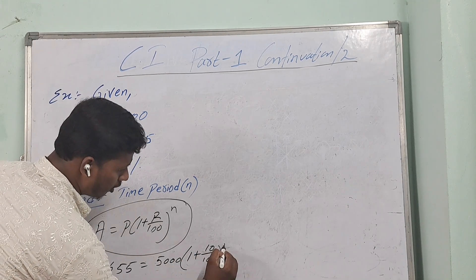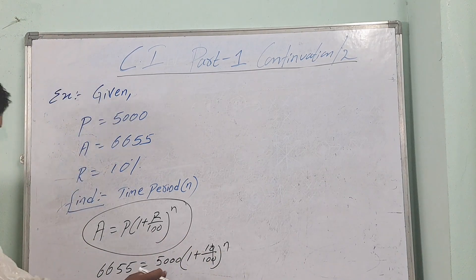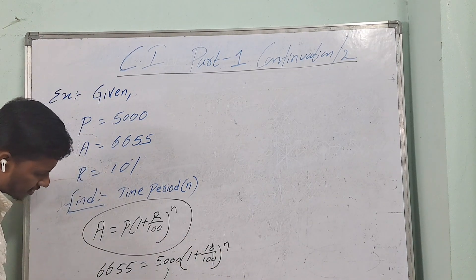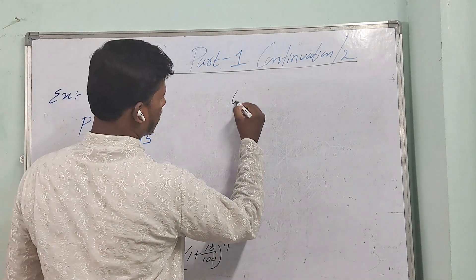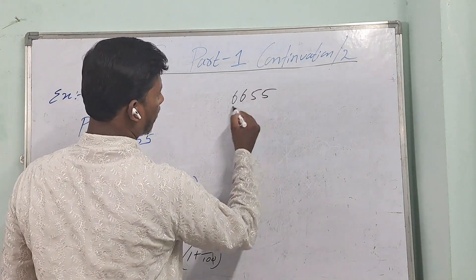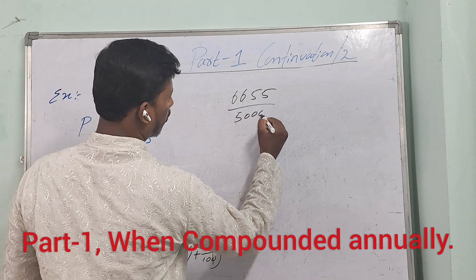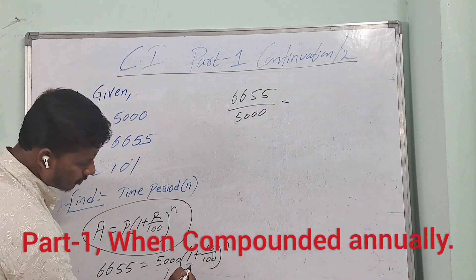Zero zero get cancelled. Now this is in multiplication, it goes to that side, it will become division. 6655 divided by 5000 is equal to 1, there is nothing means 1, cross multiply 1 into 10, 10 plus 1 into 1, divided by 1 into 10, all to the power of n.